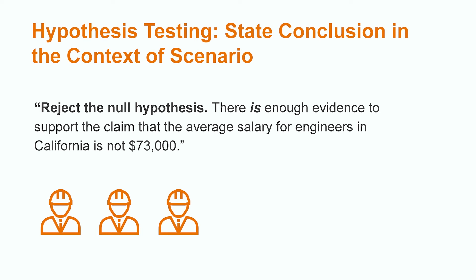The last step of our hypothesis test is stating our conclusion in the context of our scenario. In this case, we would say, reject the null hypothesis. There is enough evidence to support the claim that the average salary for engineers in California is not $73,000. Note that the claim is based on our alternative hypothesis.